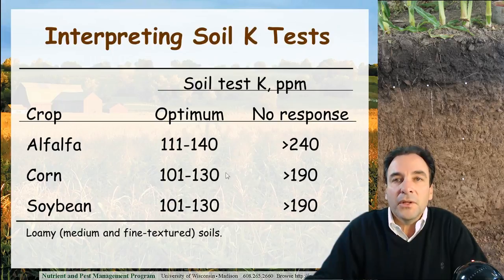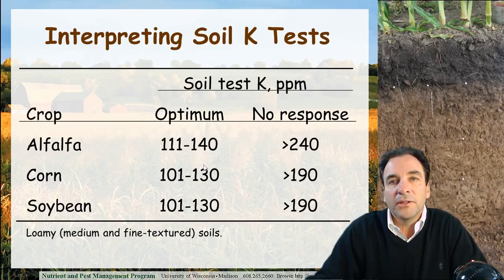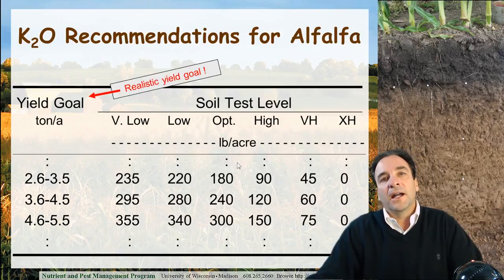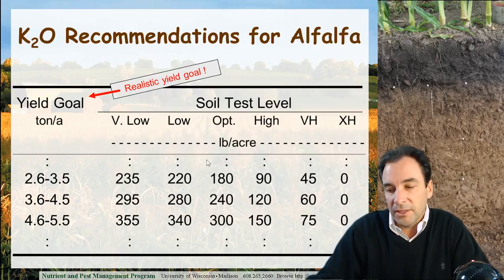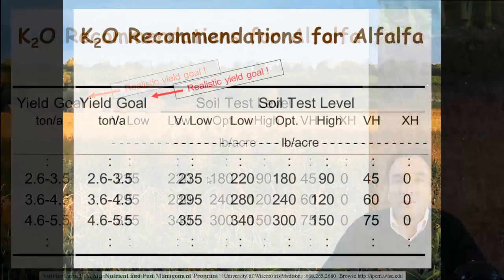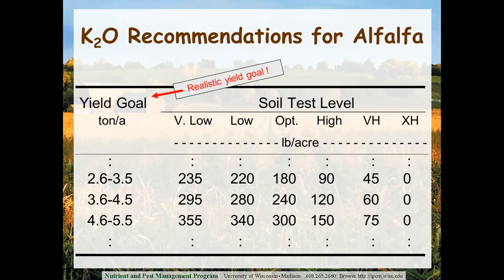What are the optimum soil test potassium levels for the major crops grown in Wisconsin? On our loamy medium and fine textured soils, the optimum ranges for alfalfa, corn, and soybean range from 100 to 140 parts per million soil test potassium. Non-responsive levels for alfalfa are greater than 240 ppm, and 190 ppm for corn and soybeans. The potassium recommendations for alfalfa show that the amount of potassium to apply is a function of soil test level and yield goal. These recommendations can be found in UW Extension Publication A2809.